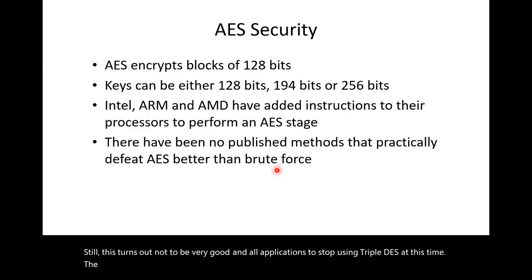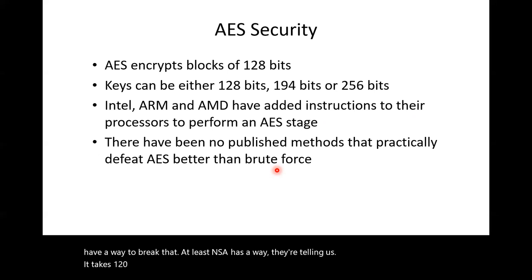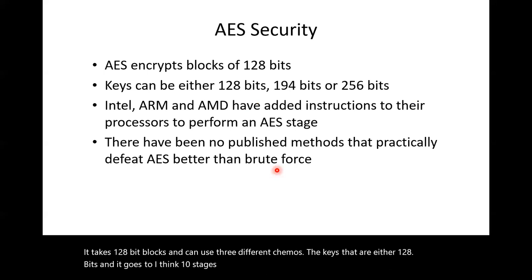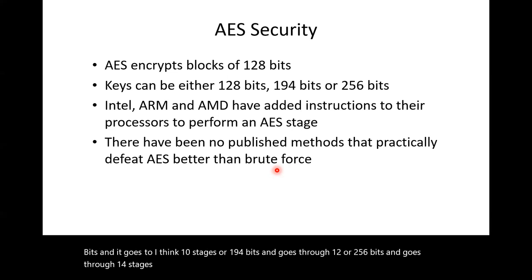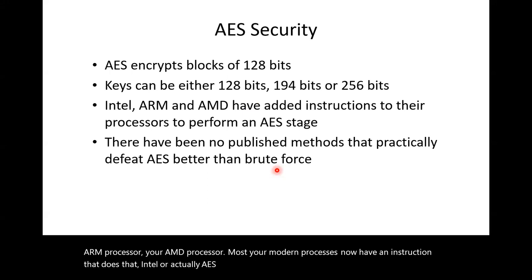The algorithm everybody is using for symmetric encryption is AES. So far, nobody seems to have a way to break it — at least the NSA has a way; they're not telling us. It takes 128-bit blocks and can use three different key modes: 128-bit keys going through 10 stages, 192-bit keys going through 12 stages, or 256-bit keys going through 14 stages. Each stage can be done by a single instruction on Intel, ARM, or AMD processors — most modern processors now have an AES instruction — which makes it much faster.